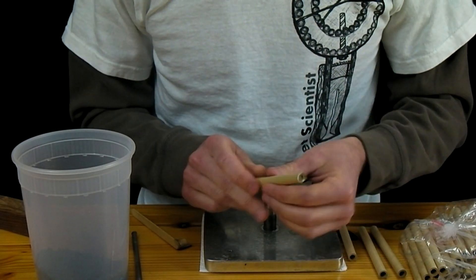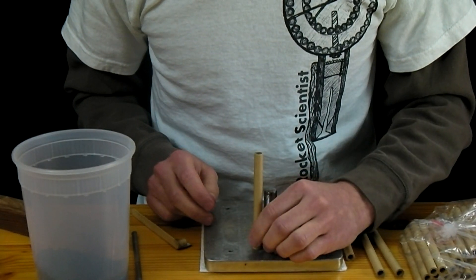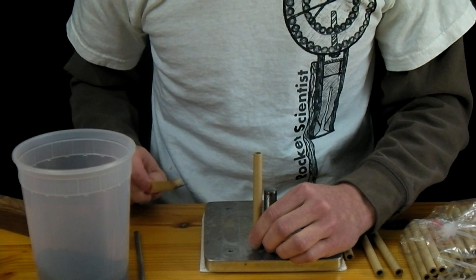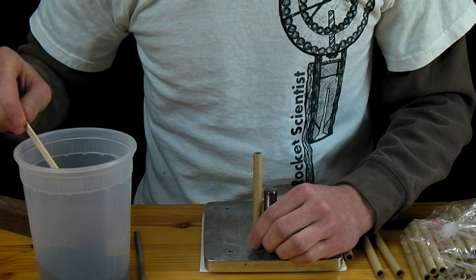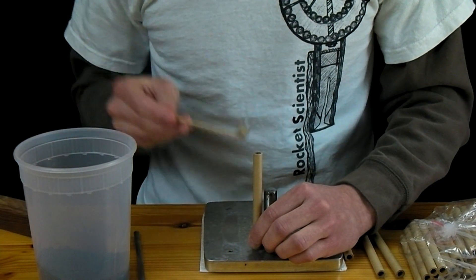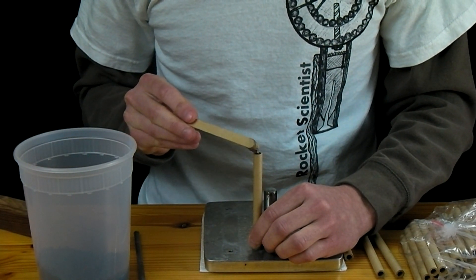So what I'll do to start this is just take one of our tubes and put it down on a solid surface. Here I have a steel plate you could easily do this on a concrete slab as well. I'll then just take our scoop here and get one scoop of our black powder and go ahead and pour that right into our tube.